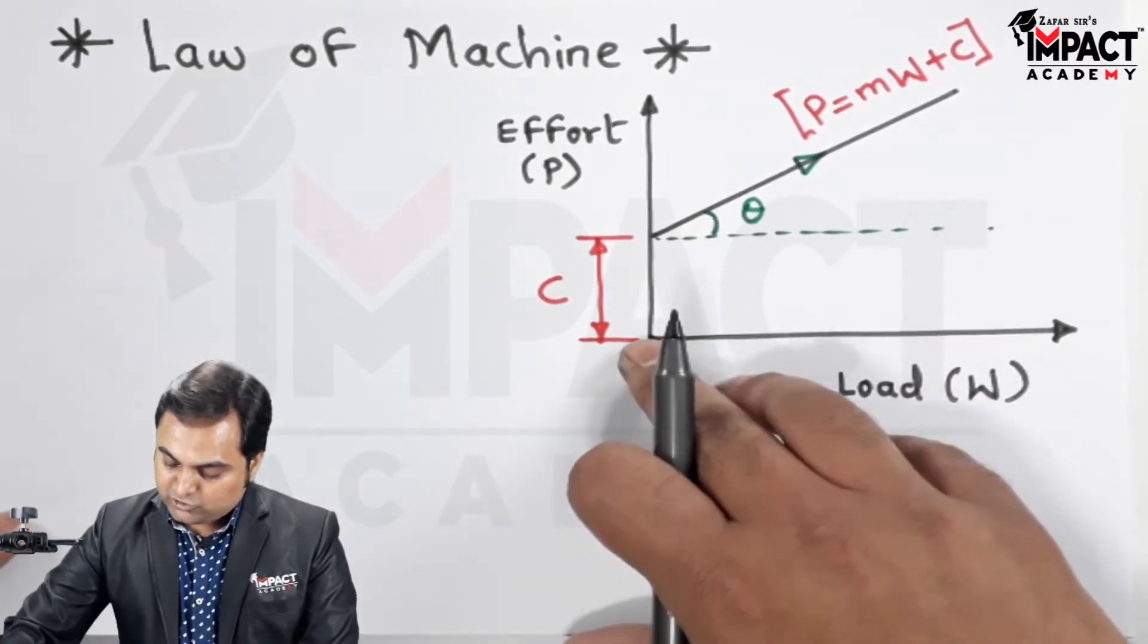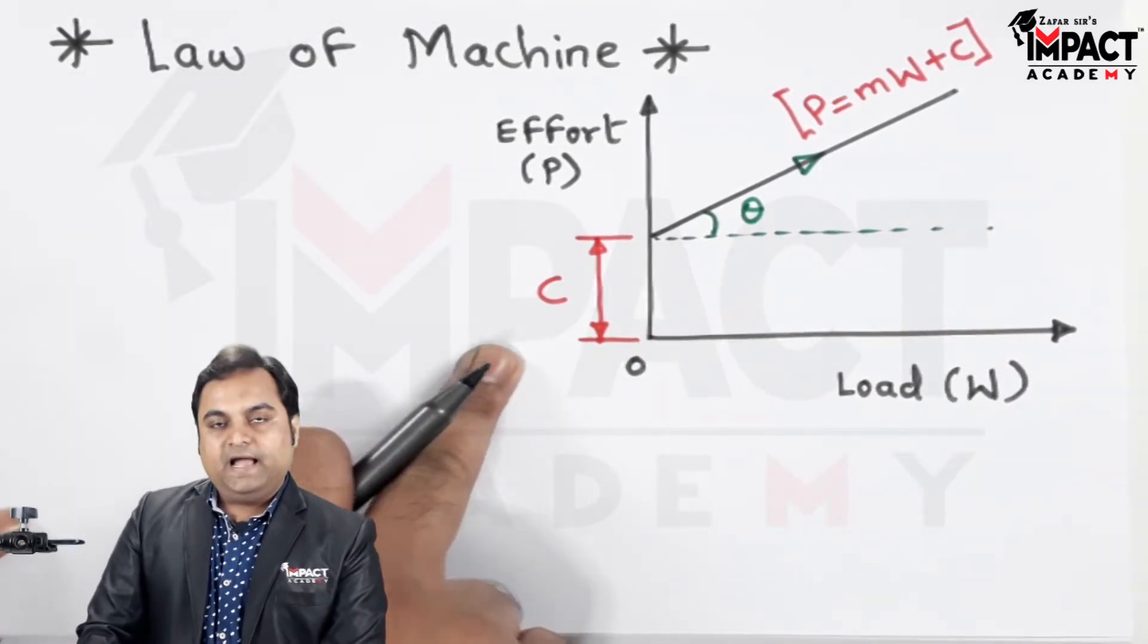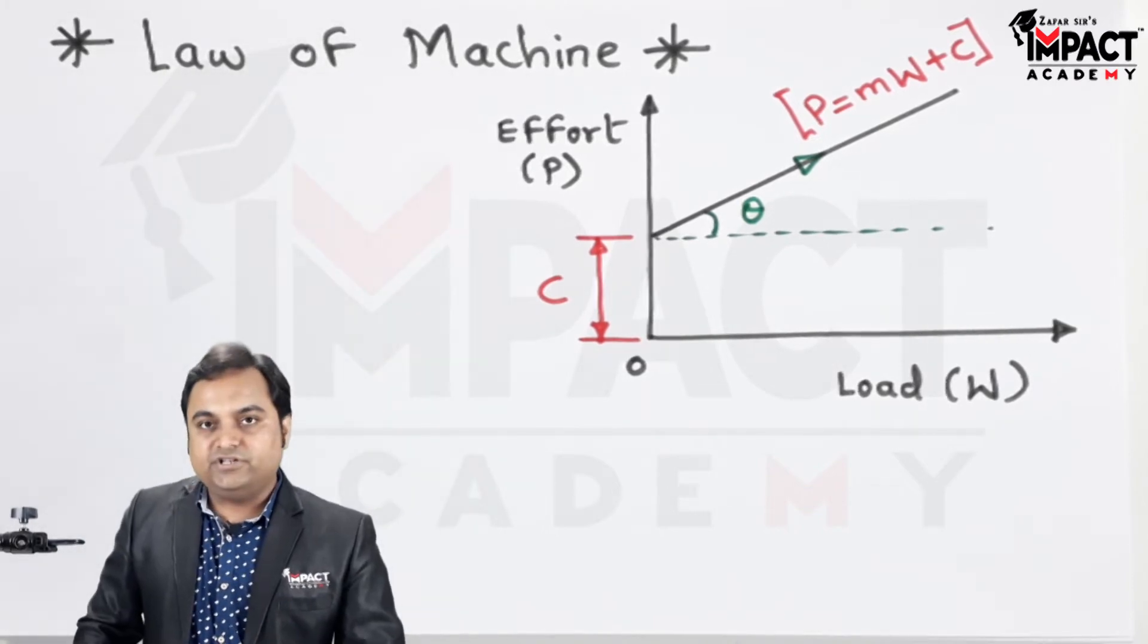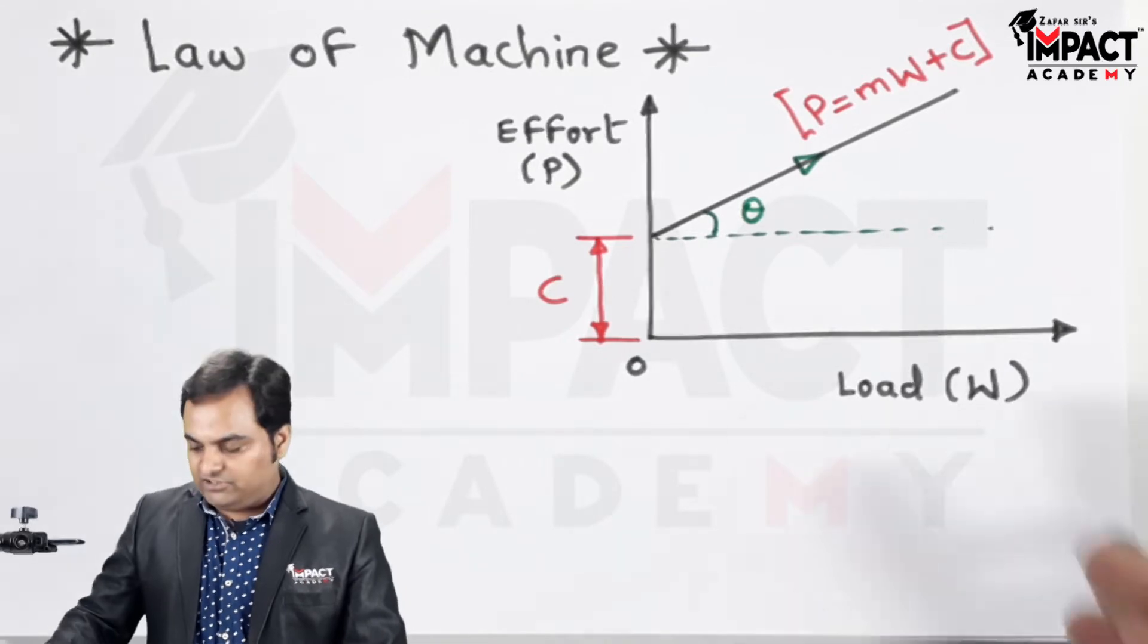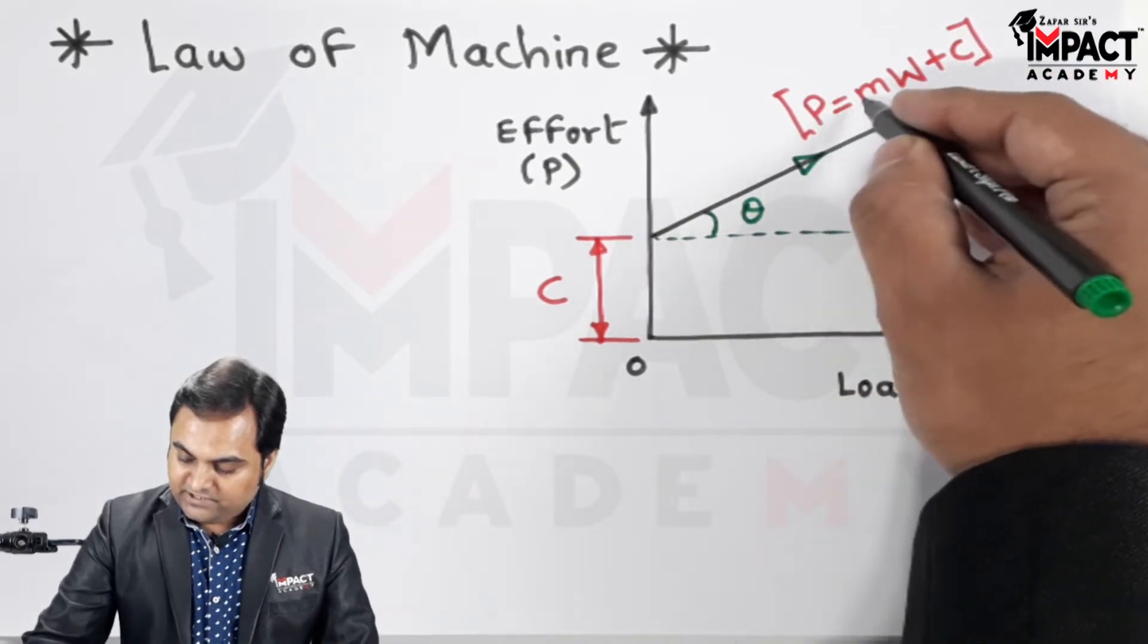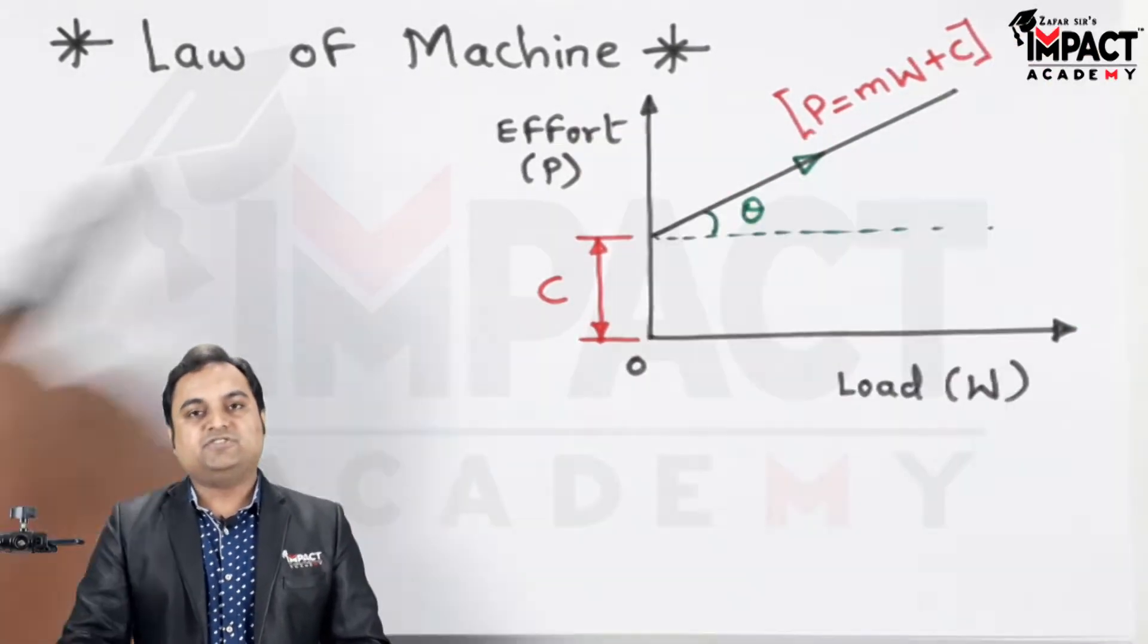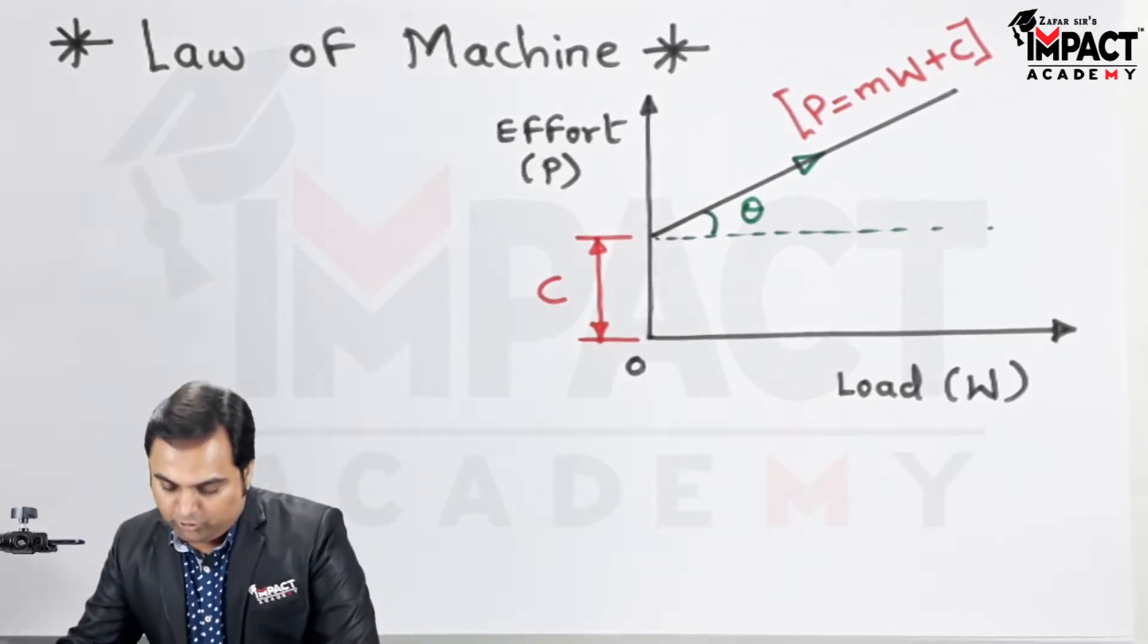Now if this line would have passed through the origin, then C value would have been zero. And such a case is present in case of an ideal machine in which the friction is not present. So that is the case of an ideal machine, and here which I am explaining, that is an actual machine. So the equation of this line, P is equal to m into W plus C, is called as the law of machine.